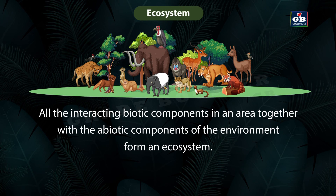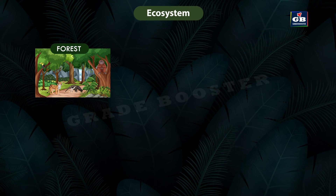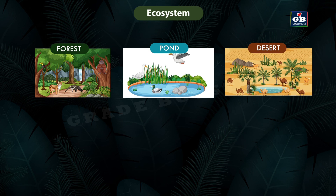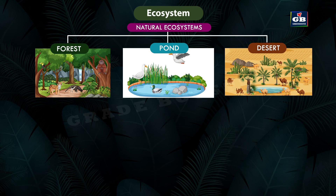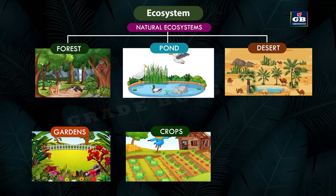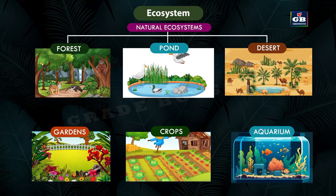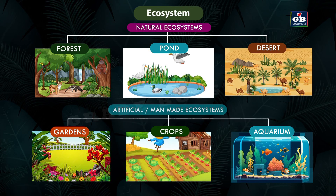All the interacting biotic components in an area together with the abiotic components of the environment form an ecosystem. Forests, ponds, and deserts are examples of natural ecosystems, whereas gardens, crop fields, and aquariums are examples of artificial or man-made ecosystems.